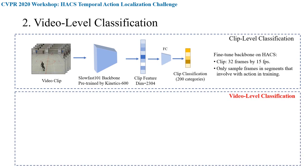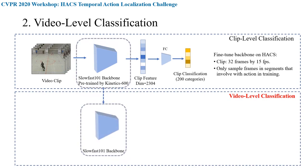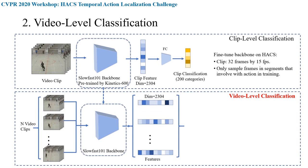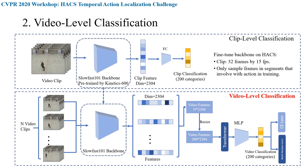The fine-tuned SlowFast has better feature expression ability on the HACS dataset. We sample multiple clips from a video and use SlowFast to extract a 2,304-dimensional feature for each clip. We concatenate along the temporal dimension and fix the temporal dimension by linear interpolation, because using the feature of the entire video makes the classifier capture more temporal information. Finally, a simple multi-layer perceptron completes the video-level classification task.